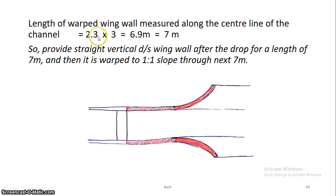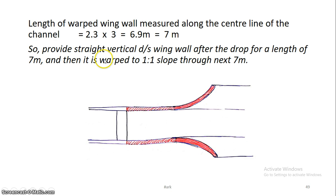The total length of the wing wall is calculated as: height × splay = 2.3 × 3 = 6.9m, plus 7m for the straight vertical portion. So straight vertical wing wall is provided at 7m and the total transition is complete.